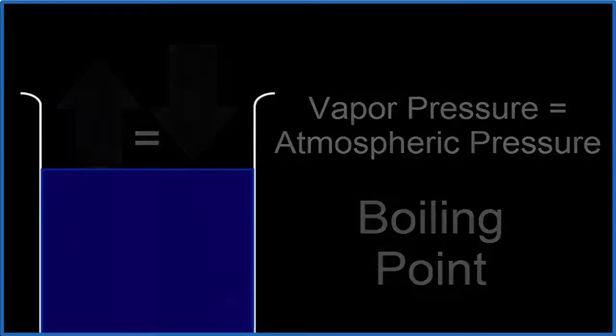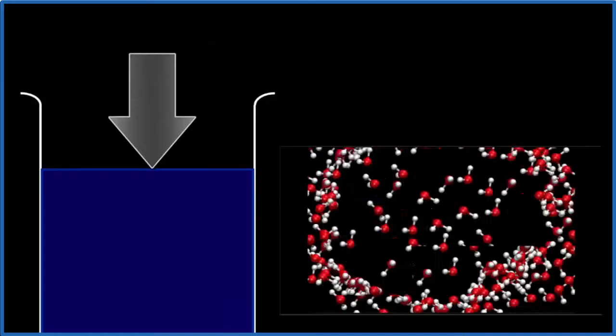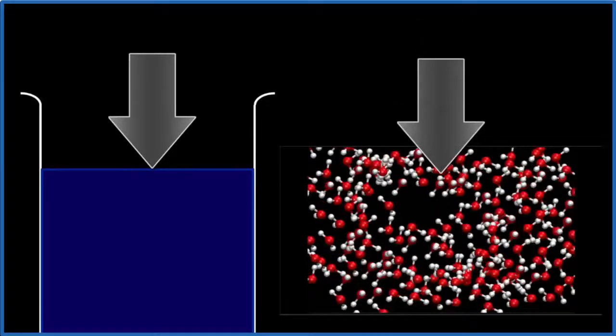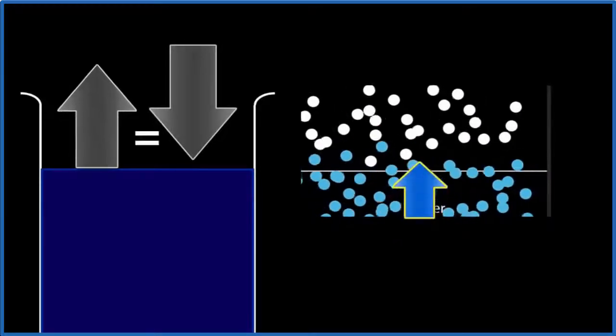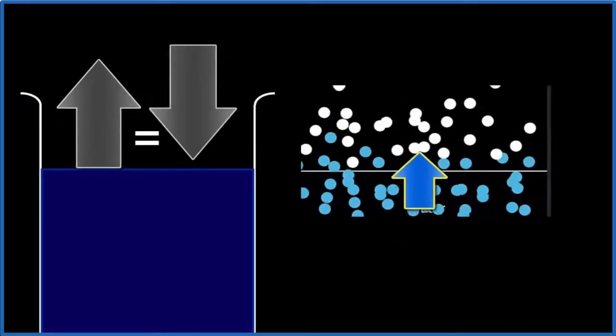Think of it this way. Atmospheric pressure pushes down, and that makes it difficult for the water molecules to spread out and form a bubble. But when the vapor pressure increases, molecules from the liquid escape, and they push against the air molecules.